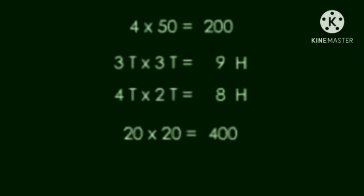20 into 20. First multiply 2 into 2, which is equal to 4, and give two zeros after the 4. So the answer is 400.